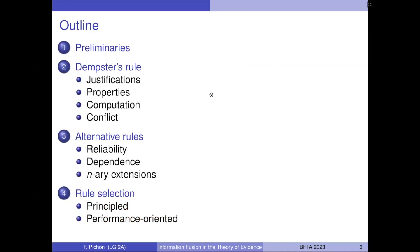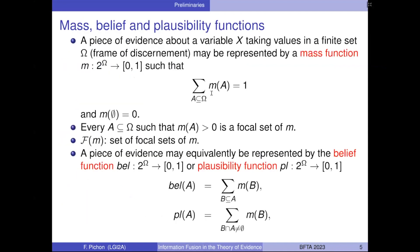Since I'm going to talk about belief function combination, I need to recall a few things about belief functions. Fortunately, Jerry did the talk this morning, so I can be brief, but I still need to cover everything to fix notation and introduce a few ideas. In Shafer's theory, a piece of evidence about variable X taking values in a finite set omega — called the frame of discernment — is typically represented by a mass function, which is a mapping from the power set of omega to the unit interval such that the sum of the masses given to the non-empty subsets of omega equals one. We call every subset of omega that receives a positive mass a focal element, and I will denote by F(M) the set of focal elements of M.